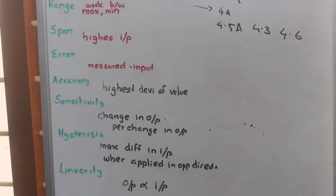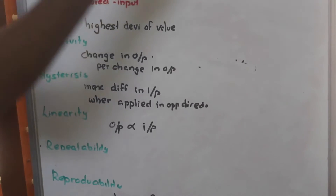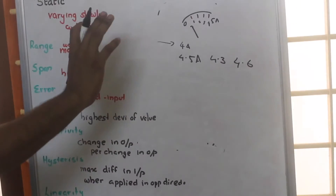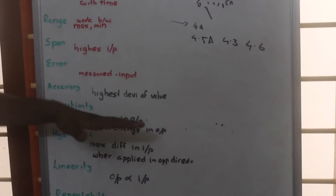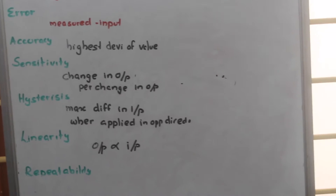Now sensitivity. Sensitivity means suppose here we are changing the input. When we are changing the input, there will be a change in output. That ratio is called sensitivity. So the ratio of change in output to change in input is what we call as sensitivity.